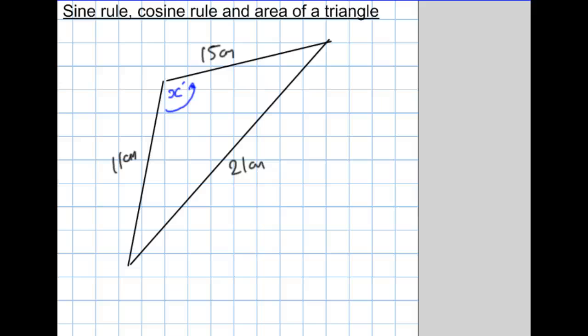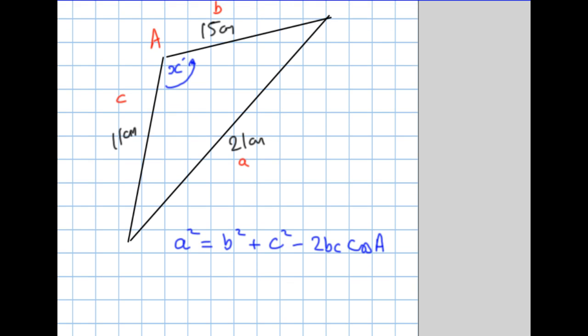Let's look at the cosine rule. Always label the angle you know, if you know an angle, or the angle you're trying to find as uppercase A. Then opposite it must be lowercase a. And then the others don't matter. I'll call that B and that C. Now the cosine rule, I'll remind you, is that A squared equals B squared plus C squared minus 2BC cosine A. But watch how I use it here. I'm going to replace A with 21. So 21 squared equals 15 squared plus 11 squared take away 2 times 15 times 11 times the cosine of A.